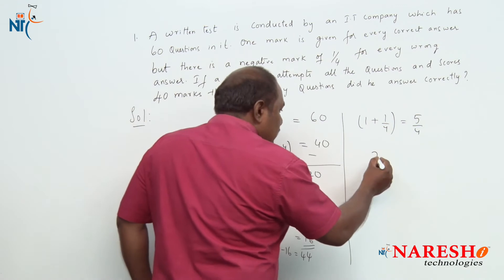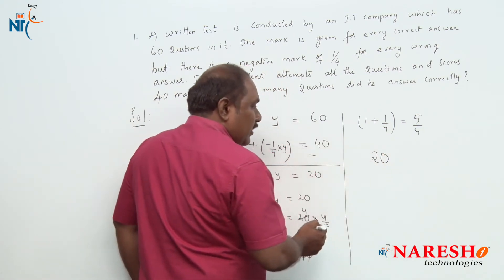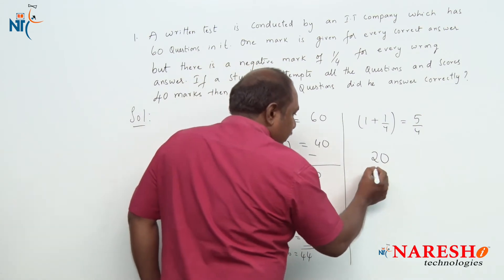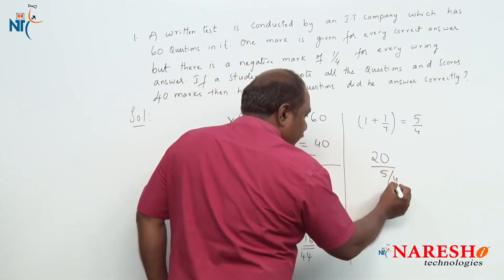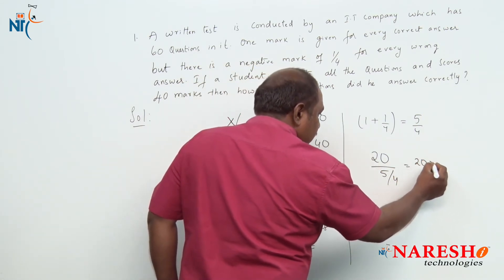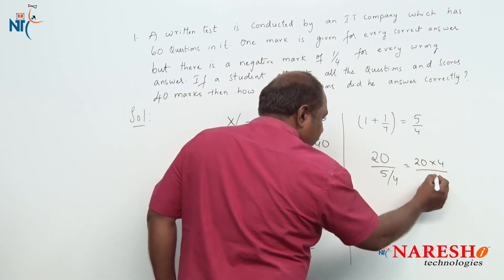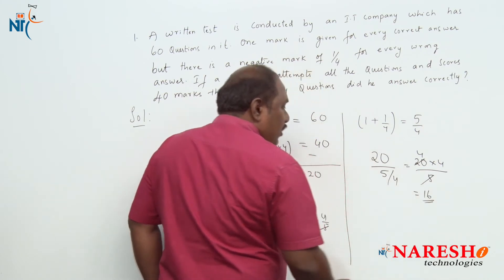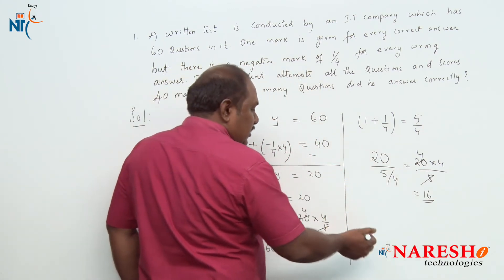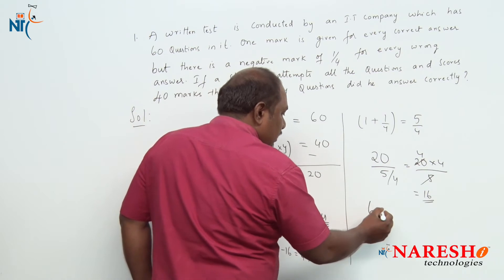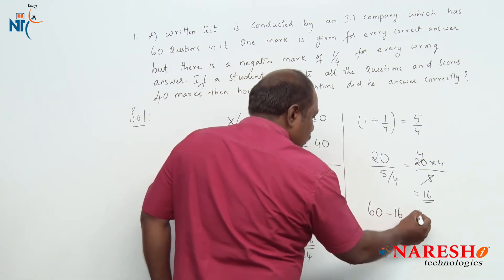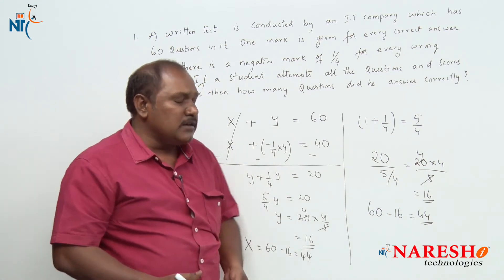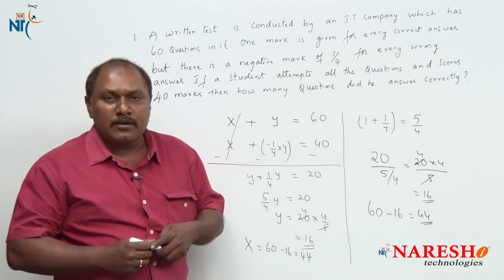So if he has lost a total of 20 marks, then how many questions did he answer wrongly? It should be 20 divided by 5/4, which is 20 times 4/5, so 4 times 4 is 16. The number of questions he answered wrongly is 16, so the number he answered correctly should be 60 minus 16, which is 44. These are the two methods in which we can answer this question.